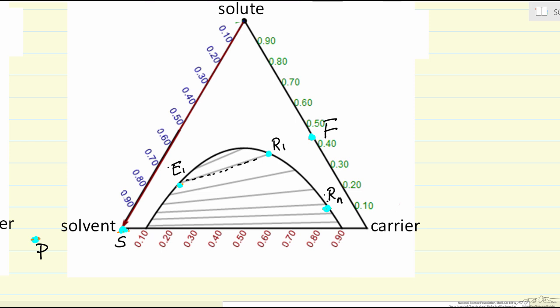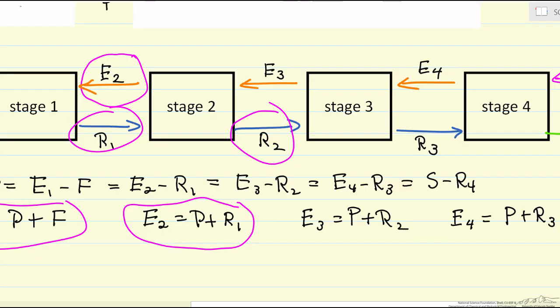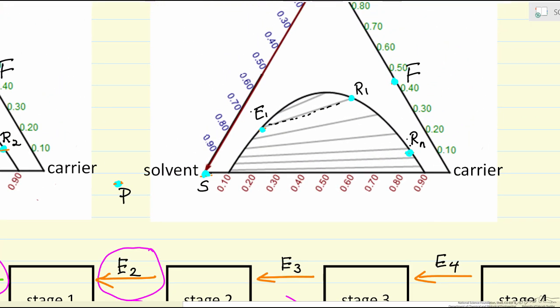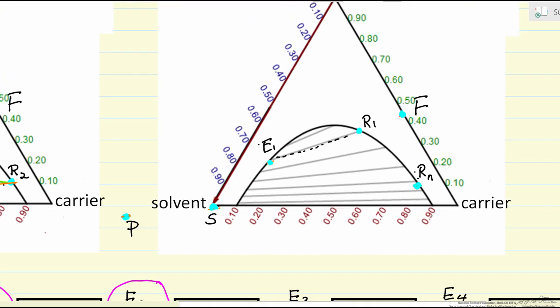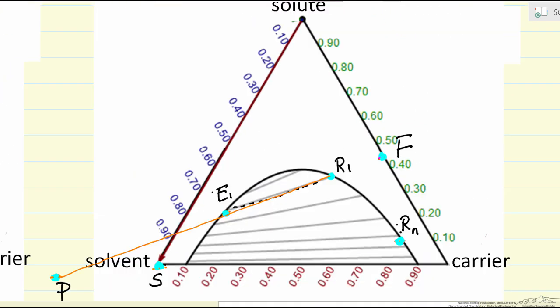Along this tie line we have equilibrium. We now can look at our mass balances, and here it says that p plus r1 is E2. In other words we get the composition E2 by summing p and r1, and that means if I draw a line between r1 and p, the intersection is going to give me the value of E2. So I've drawn the orange line, and this point here corresponds to E2 from our mass balance.